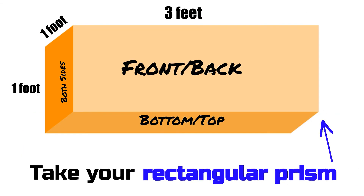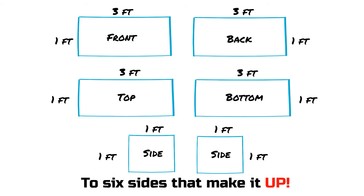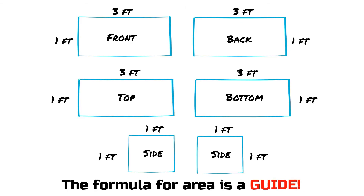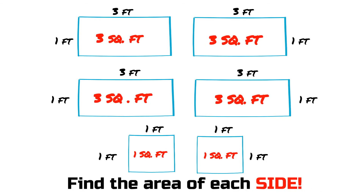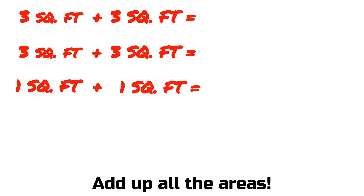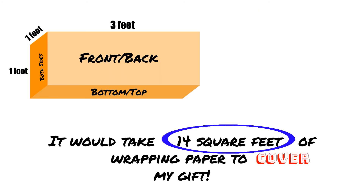Take your rectangular prism and break it down to the six sides that make it up. The formula of area is a guide — find the area of each side. Take what you find and add them up for the sum you find. It's surface area all day.